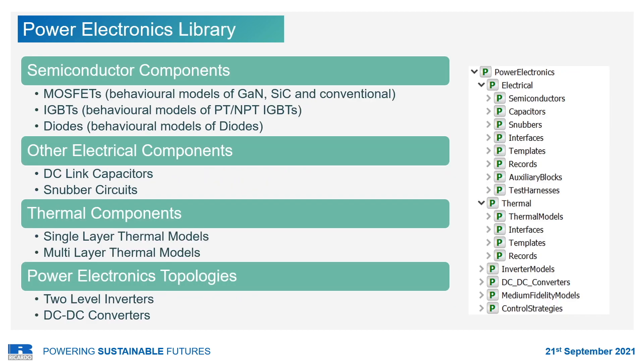The power electronics library includes high- and medium-fidelity behavioral models of semiconductor components, such as IGBTs, MOSFETs, and diodes, as well as models for capacitors, snubbers, and the corresponding thermal models of each component. Utilizing those low-level components, models of power electronics topologies such as DC-DC converters and inverters were developed.